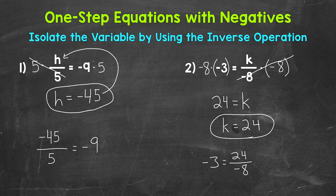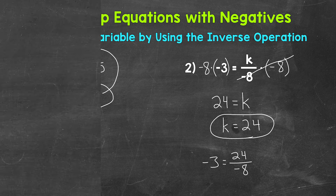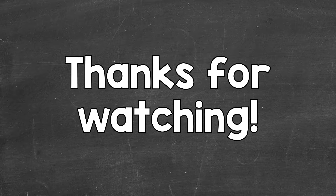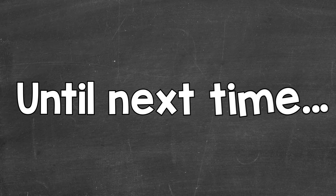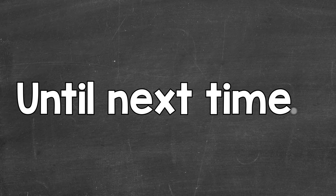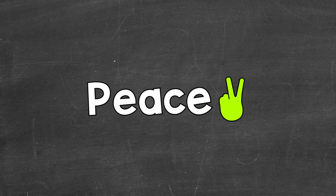So there you have it — that's how you solve one-step multiplication and division equations with negatives. I hope that helped. Thanks so much for watching. Until next time, peace.